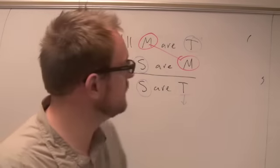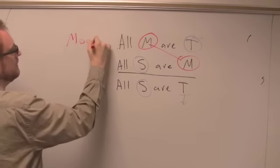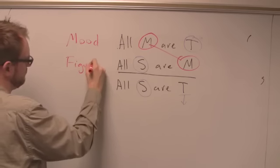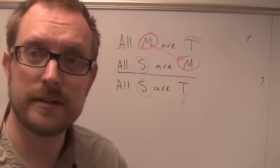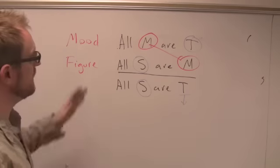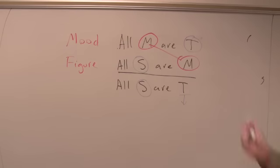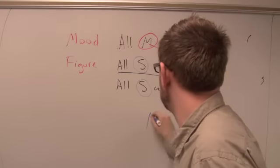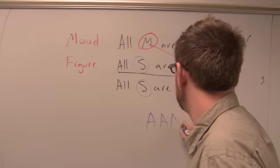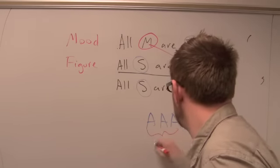Now there are two other things to discuss: the mood of an argument and the figure of an argument. All categorical syllogisms have both a figure and a mood. The mood is identified by three letters — one for each proposition. In our example we have an A proposition, an A proposition, and an A proposition, so the mood is A-A-A.